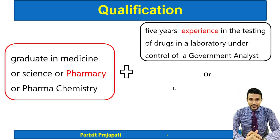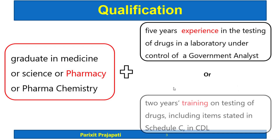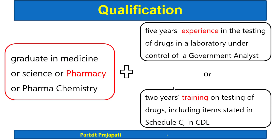The person must have at least five years experience in testing of drugs in a laboratory under the control of a Government Analyst, or two years training in testing of drugs including items stated in Schedule C in the Central Drug Laboratory (CDL). Schedule C contains biologicals and other related products.